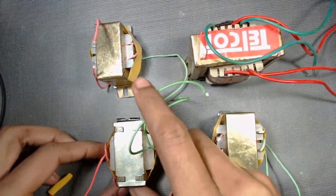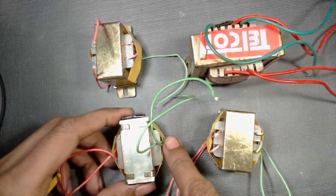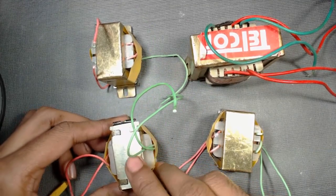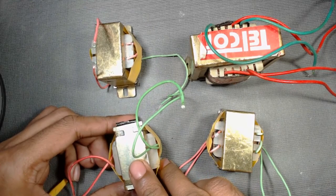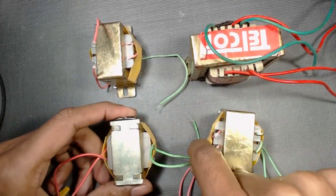We can see here this transformer has two terminals both the sides. So it is an ordinary transformer or you can tell it is a non-center tap transformer. First, we have to identify the primary and secondary side of this transformer.